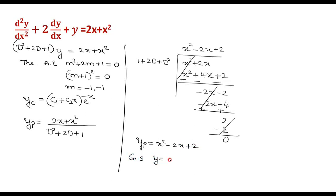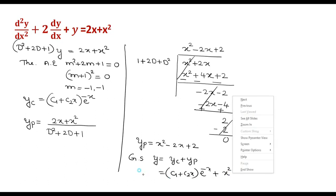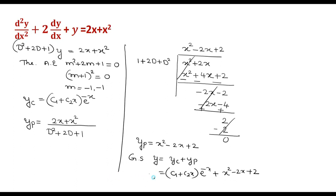The general solution is y equals yc plus yp, which is (c₁ plus c₂x)e^(−x) plus x² minus 2x plus 2. This is the general solution.